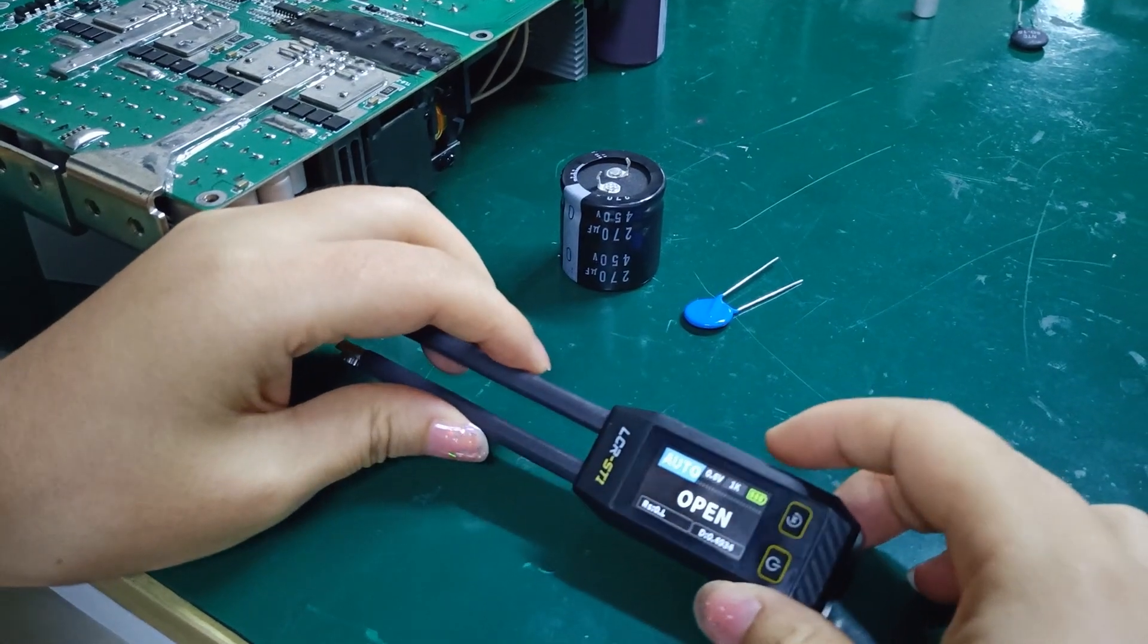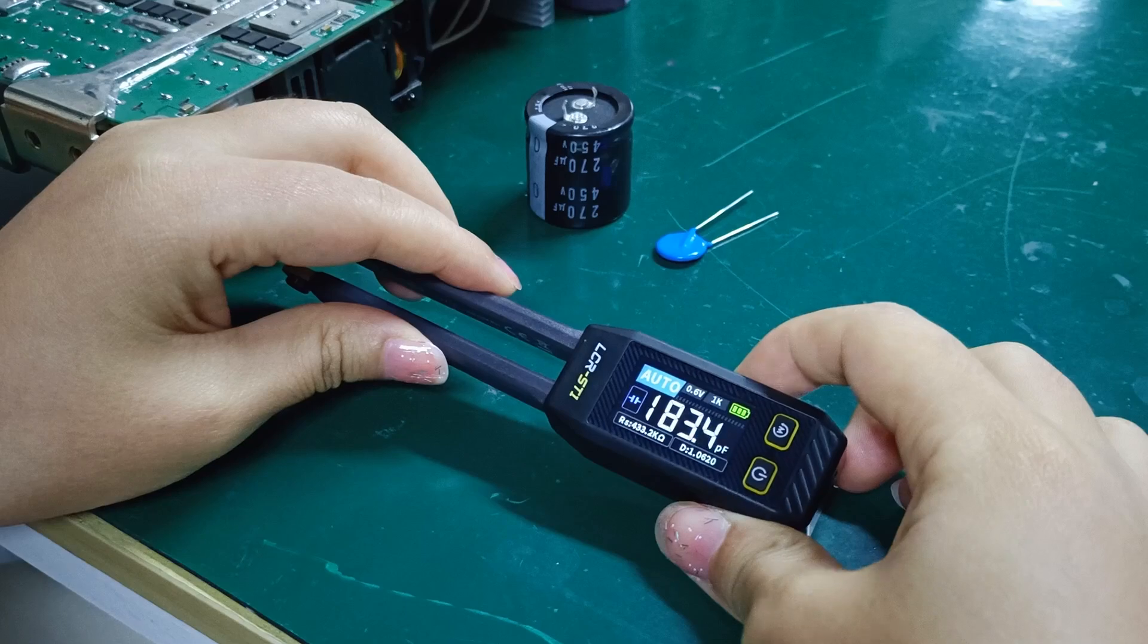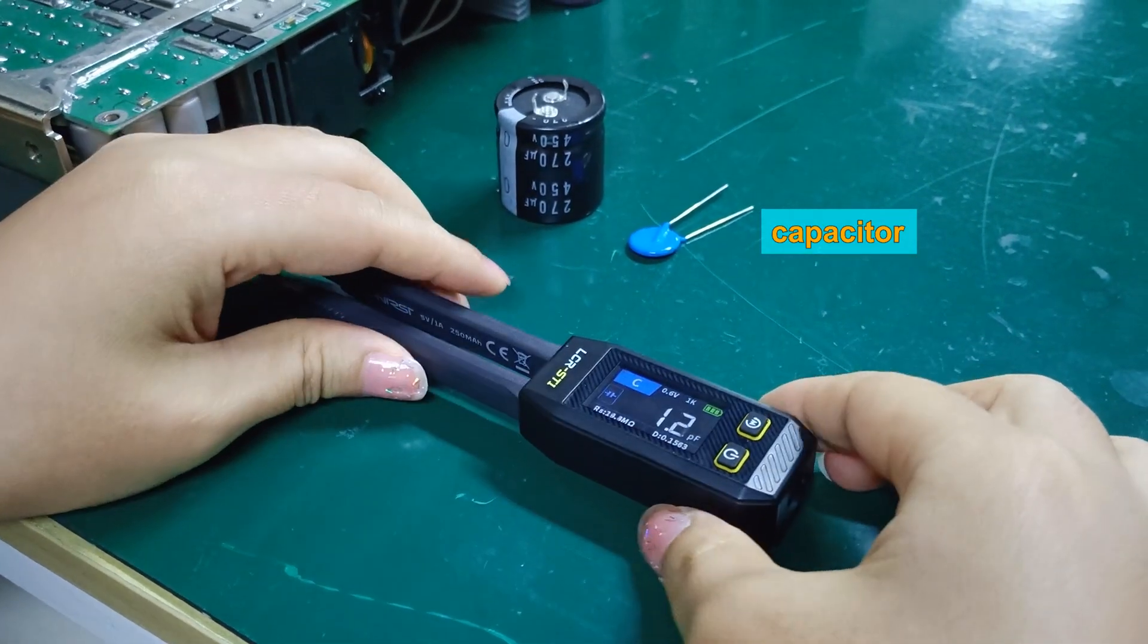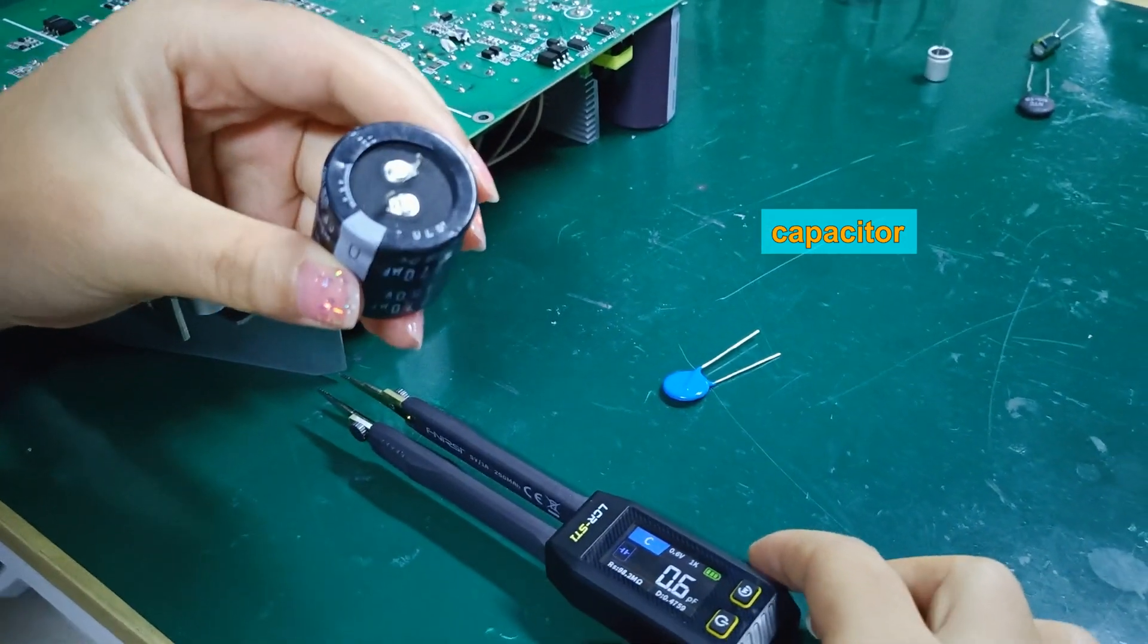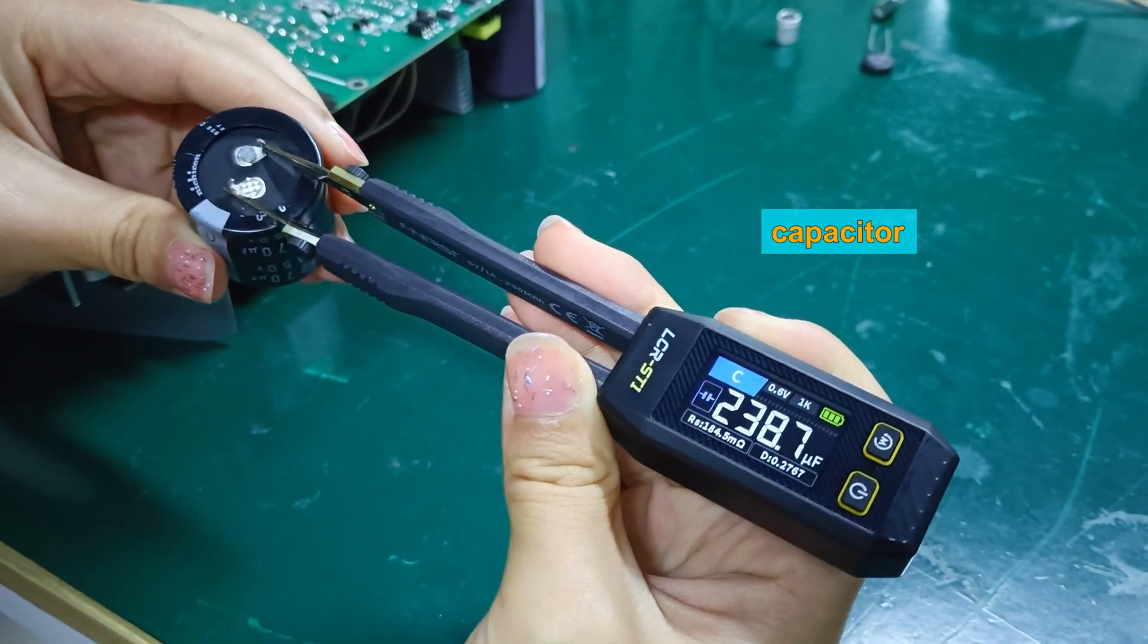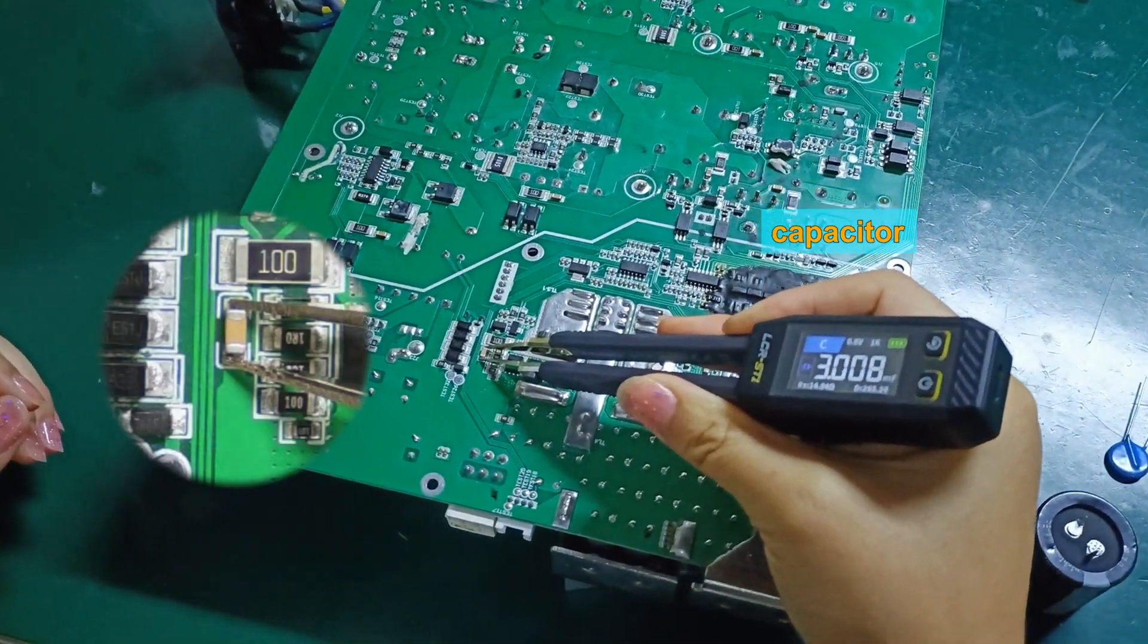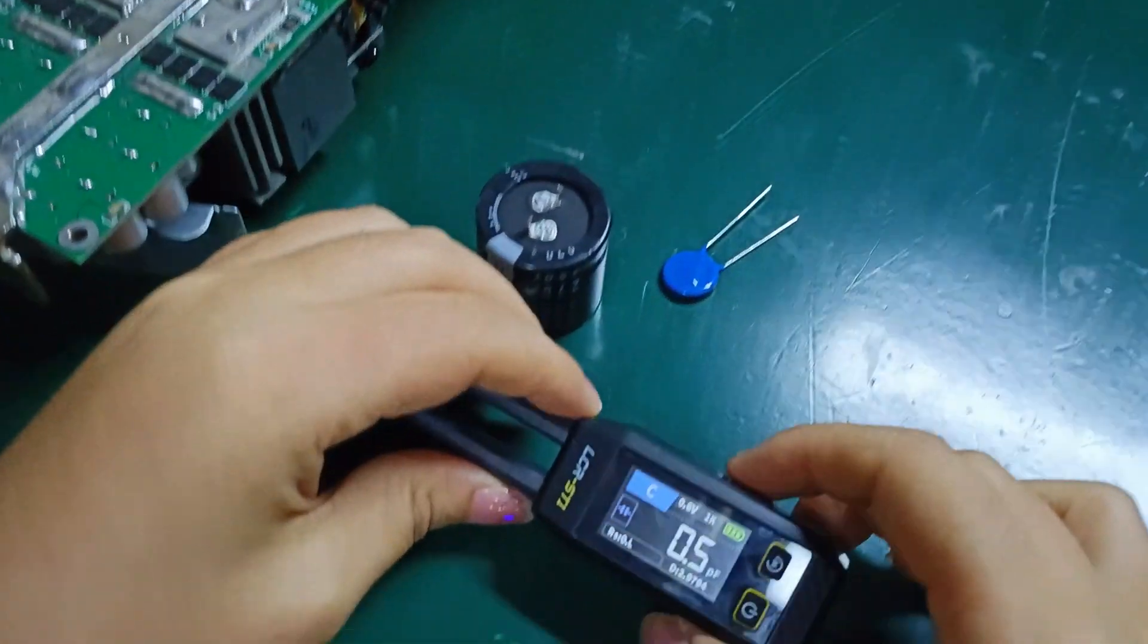Next up, I'll show you how to use the bridge tweezers to test components. First, set this to the capacitor mode. Remember, when measuring capacitors, we need to discharge them in advance. The capacitors I'll demonstrate next have all been discharged. Okay, it's simple and fast to judge their quality.